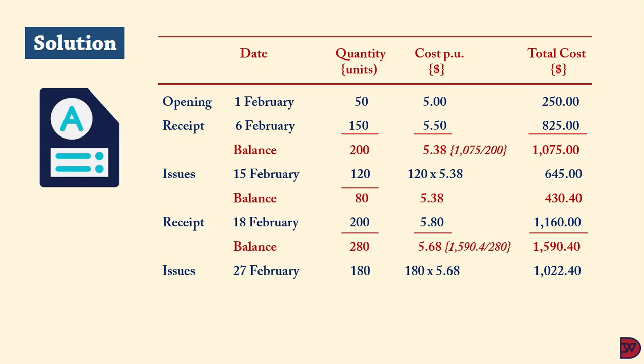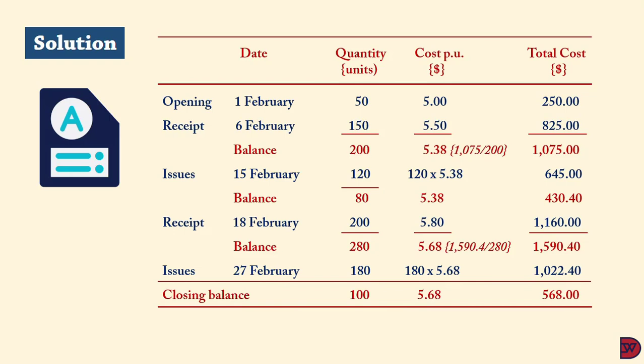Issue on 27 February of 180 units at $5.68 = $1,022.40. Closing balance: 100 units at $5.68 = $568. So the three methods give different closing inventory values: $580 under FIFO, $531 under LIFO, and $568 under weighted average cost.